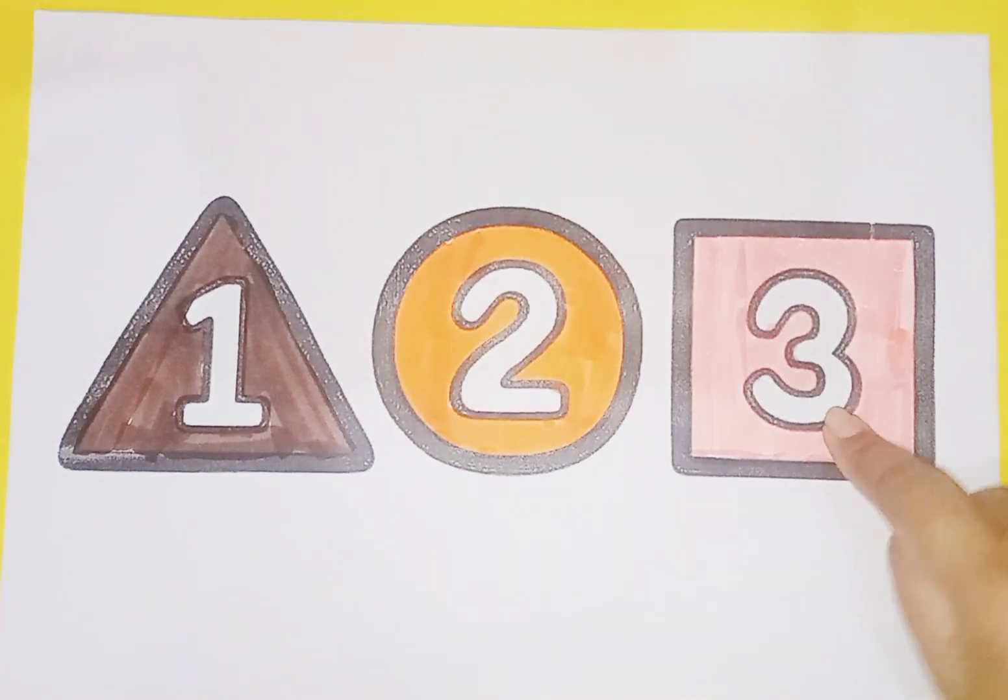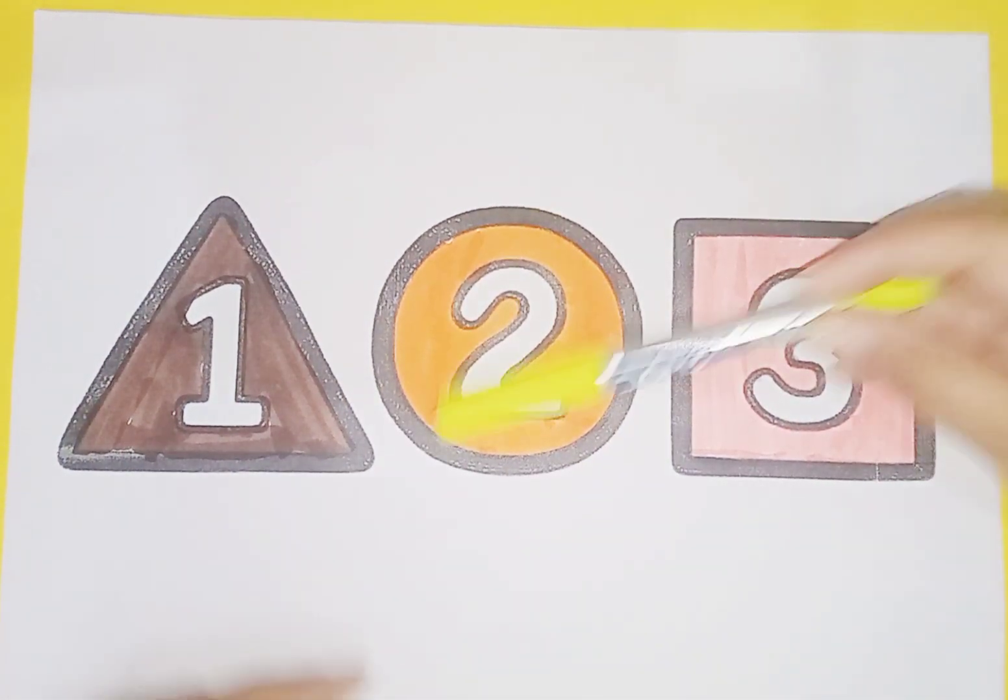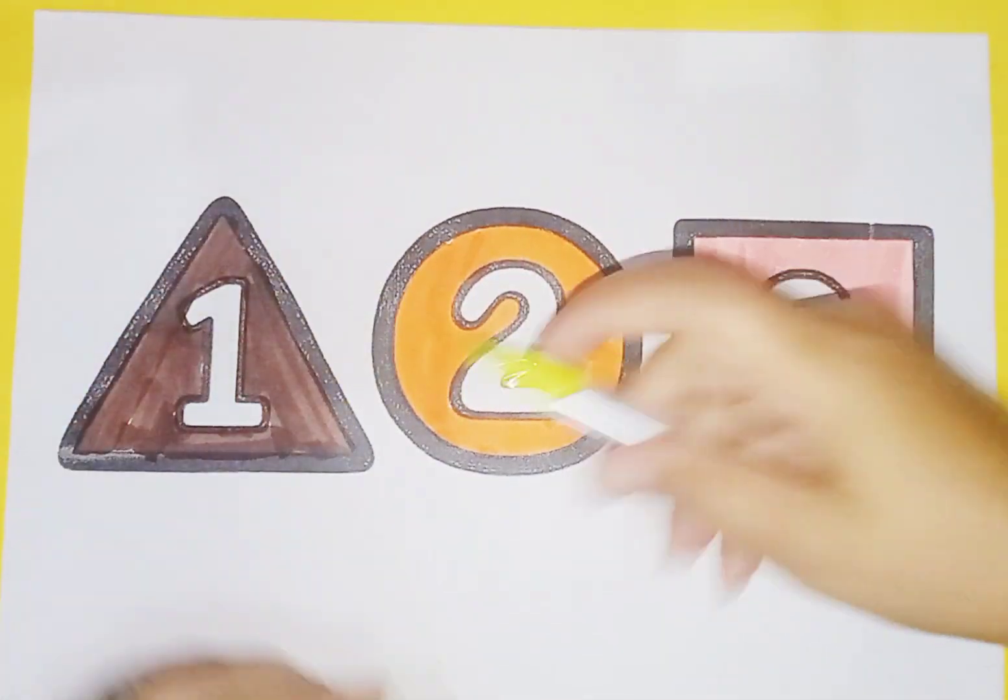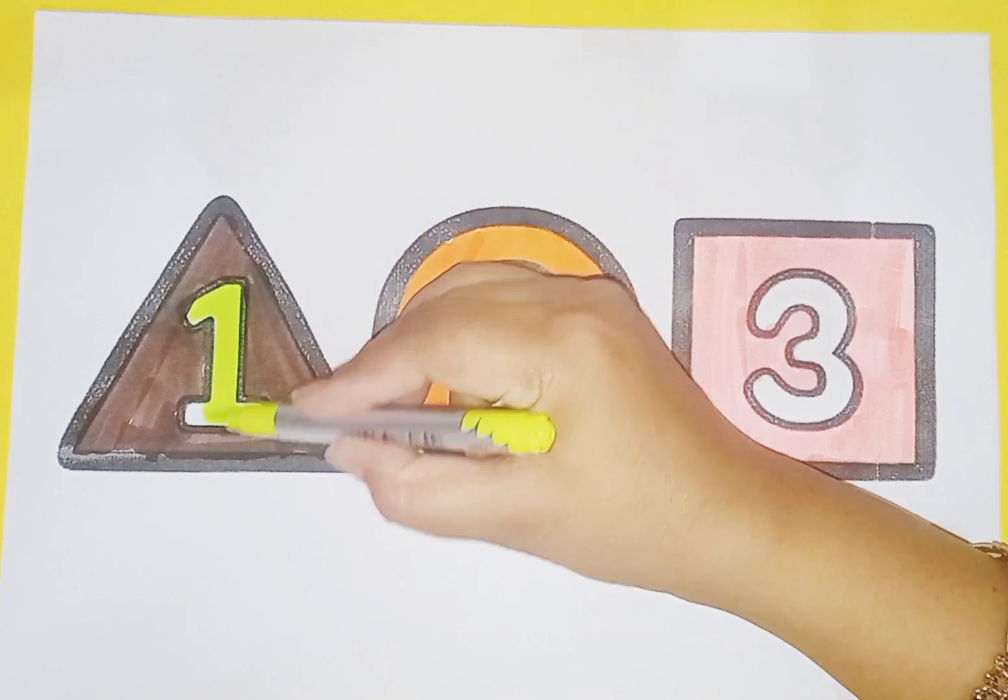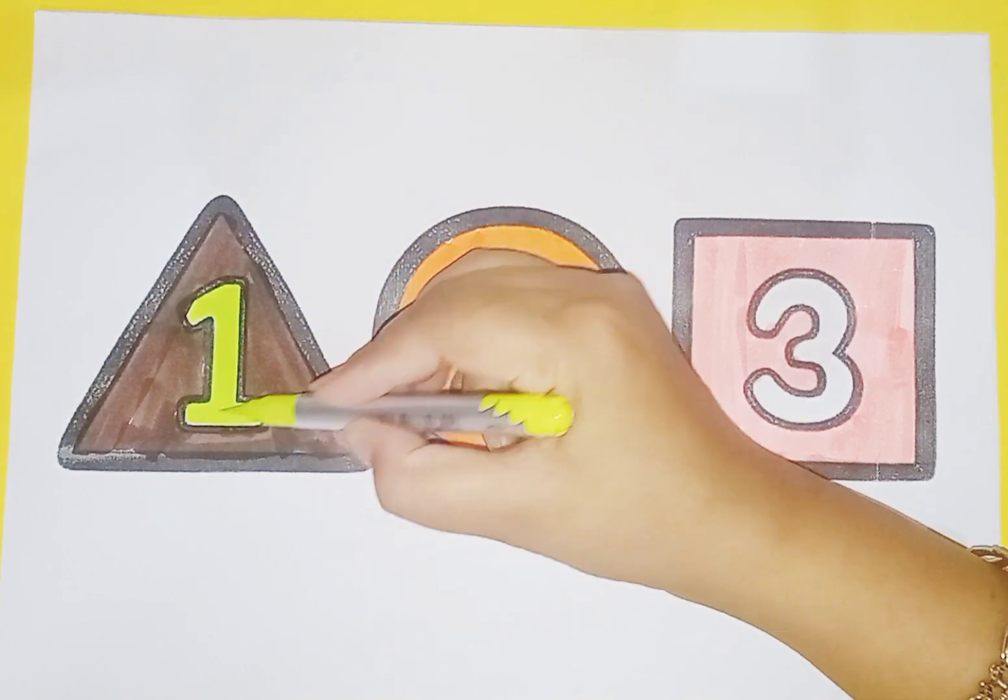Now we learn numbers and their spelling. Parrot yellow color. One. O-N-E. One.